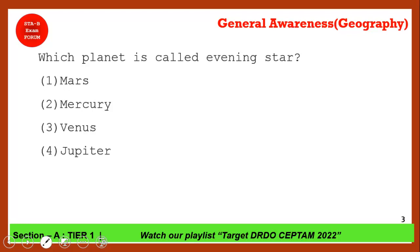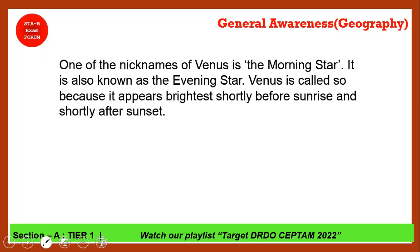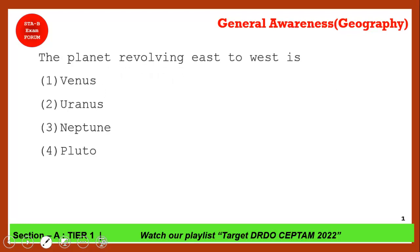Which planet is called the evening star? This is Venus. Venus has several nicknames: morning star, evening star, veiled planet, hottest planet, and twin or sister of Earth. Venus appears as a bright object shortly before sunrise and shortly after sunset, which is why it is called both the morning star and the evening star.